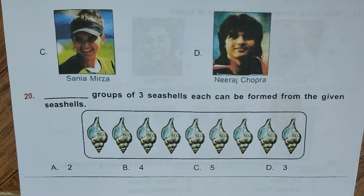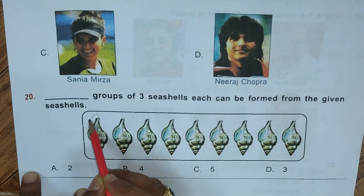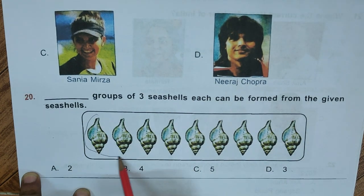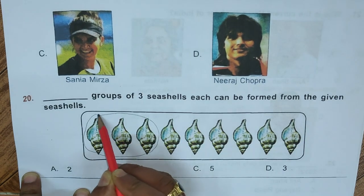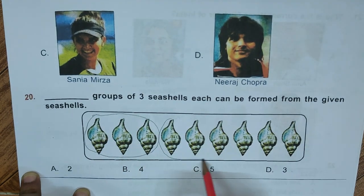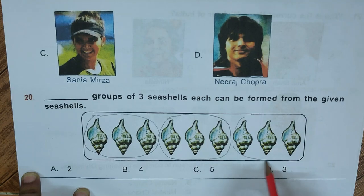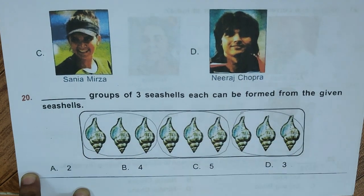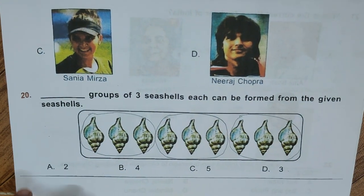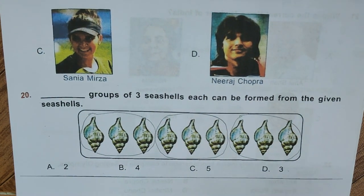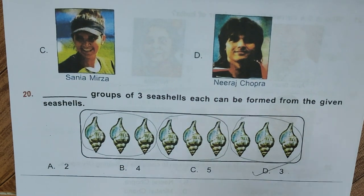Question 20: They have groups of three seashells each that can be formed from the given seashells. Let us make the groups — Group 1, Group 2, and Group 3. So there are three groups which can be made. Among options A, B, C, D — option D has the answer 3, which is the correct answer. Hence D is the correct answer.